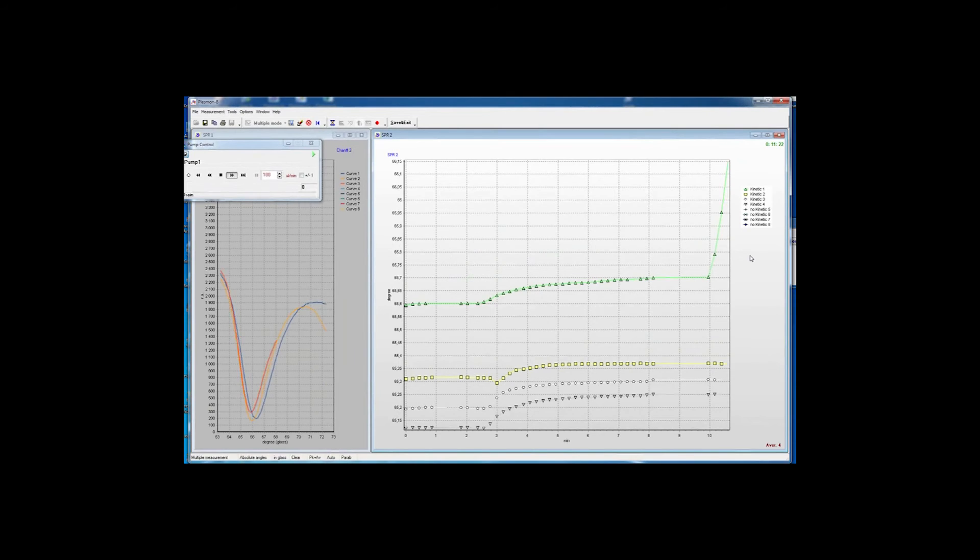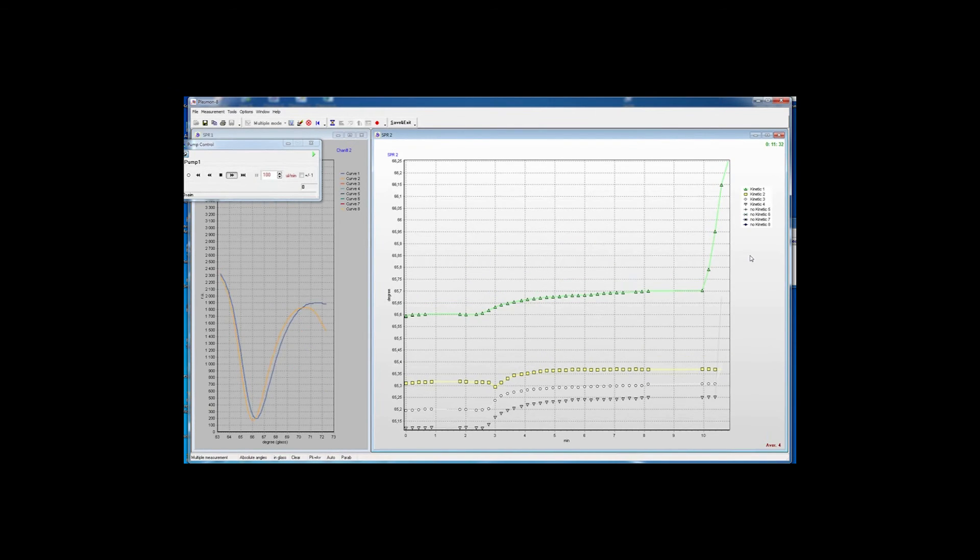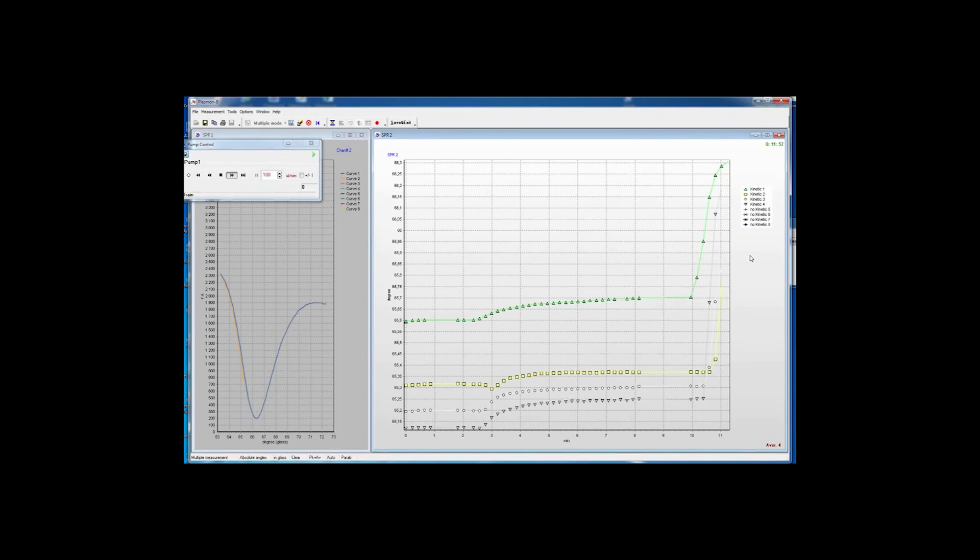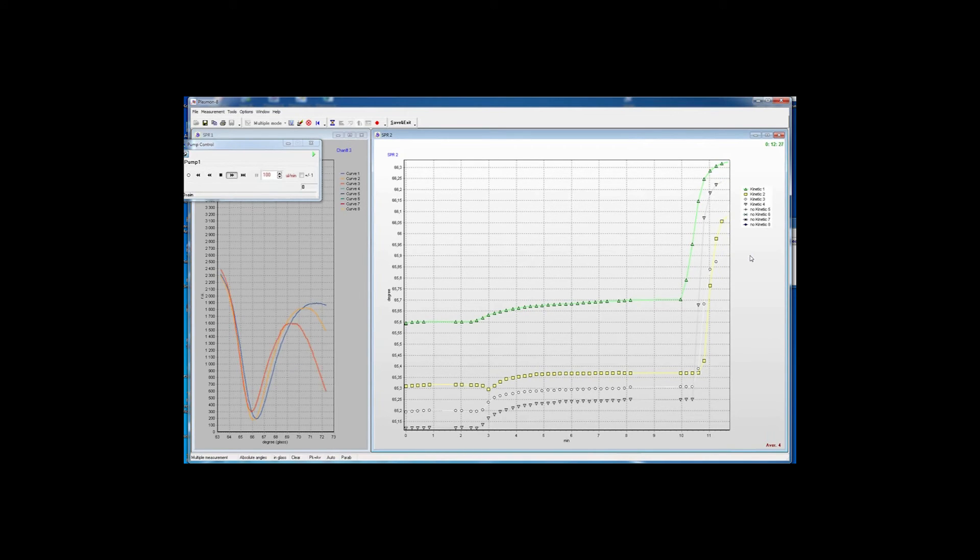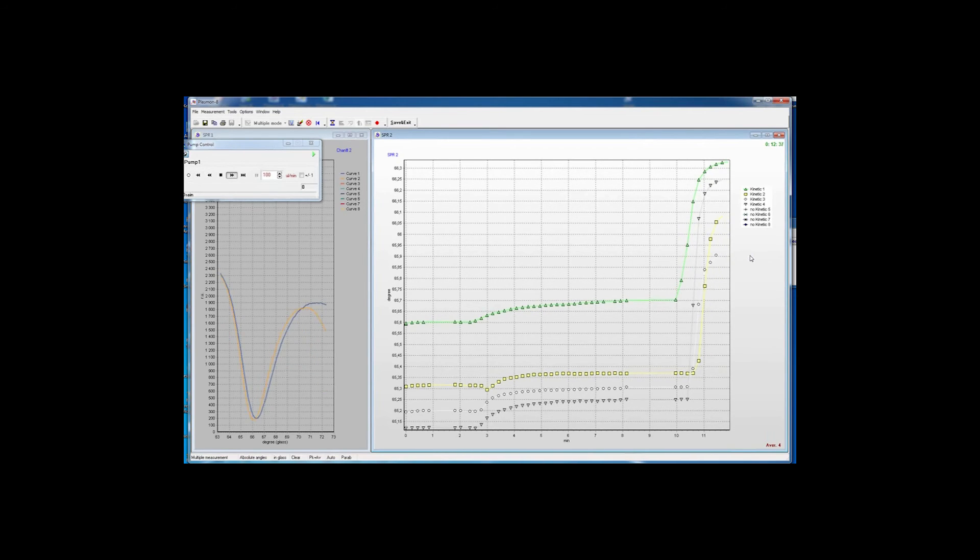For the test experiment, we will inject BSA and anti-BSA into the cuvette. After establishing the baseline in the buffer, we are going to introduce the measurement solution. As a result, the position of minima will shift.